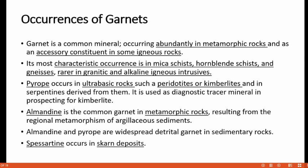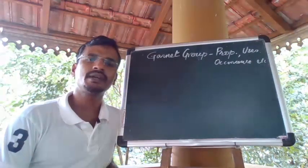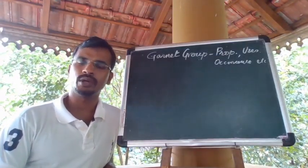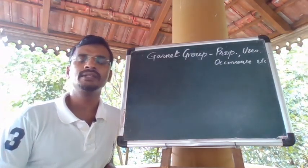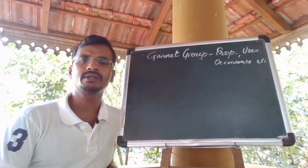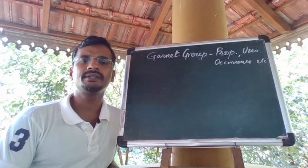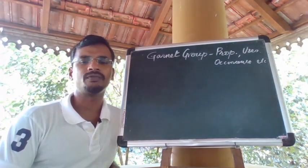Garnet is a common mineral occurring abundantly in metamorphic rock and as an accessory constituent in some igneous rocks. Its most characteristic occurrence is in mica schist, hornblende schist and gneisses, and it is rarer in granitic and alkaline igneous intrusions. Pyrope occurs in ultrabasic rocks such as peridotite or kimberlite and in serpentines derived from these rocks. It is used as a diagnostic tracer mineral in the prospecting of kimberlite during exploration. Almandine is the common garnet in metamorphic rocks resulting from regional metamorphism of argillaceous sediments. Almandine and pyrope are widespread detrital garnets in sedimentary rocks.